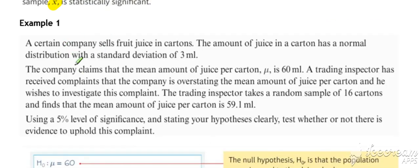Here we have our first example. The amount of juice in a carton has a normal distribution with a standard deviation of 3 ml. The company claims that the mean amount of juice is 60 ml. A trading inspector has received complaints that the company is overstating the mean amount. We have a random sample of 16 cartons, and our test statistic, the mean amount of juice per carton, is 59.1 ml. Significance level is 5%.